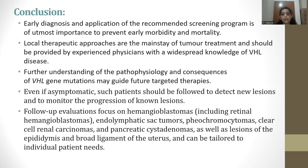Conclusion: Early diagnosis and application of recommended screening programs for VHL is of utmost importance to prevent early morbidity and mortality. Local therapeutic approaches are the mainstay of tumor treatment and should be provided by experienced physicians with widespread knowledge of VHL disease. Further understanding of the pathophysiology and consequences of VHL gene mutations may guide further targeted therapies. Even if asymptomatic, such patients should be followed to detect new lesions and monitor progression of known lesions. Follow-up evaluation focuses on hemangioblastomas, endolymphatic sac tumors, pheochromocytomas, RCC, and pancreatic cystadenomas, as well as lesions of the epididymis and broad ligament of the uterus, and can be tailored to individual patient needs.